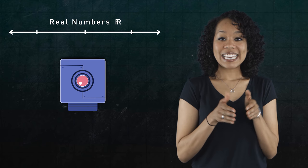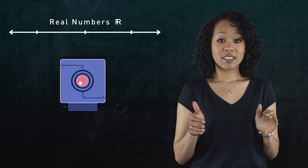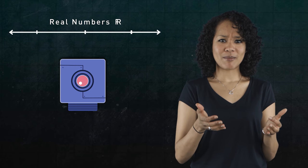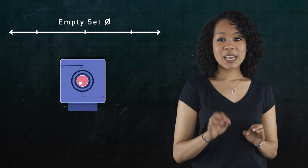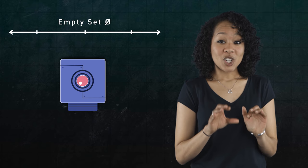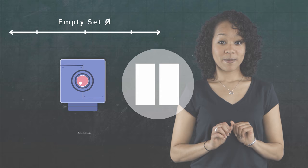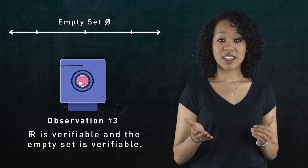Finally, suppose we have an indicator machine for the entire set of real numbers. Then, the whole set is itself verifiable, since every real number is a real number. And the empty set, the set that contains no numbers, is also verifiable. Try pausing the video to think about why. This is observation number three.